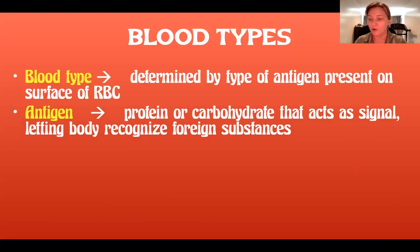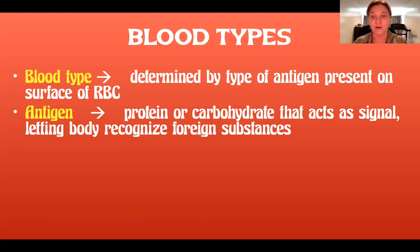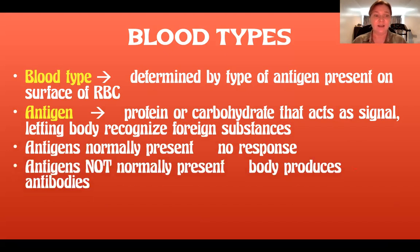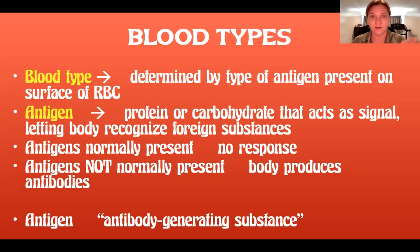Now that we know what blood is composed of, we can talk about blood types. Blood type is determined by the type of antigen present on the surface of a red blood cell. An antigen is a protein or carbohydrate that acts as a signal, letting the body recognize foreign substances. If antigens are present that are not normally on your cells, your body will produce antibodies. Antigen is actually short for 'antibody-generating substance.'